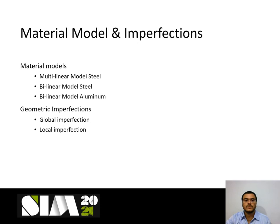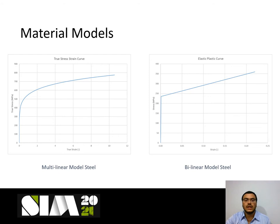For the effects of material models and imperfections, two different material models for steel are considered and one bilinear material model for aluminium is considered. Two geometric imperfections — global and local — are also considered. The material models for steel are a multilinear material model and a bilinear material model.